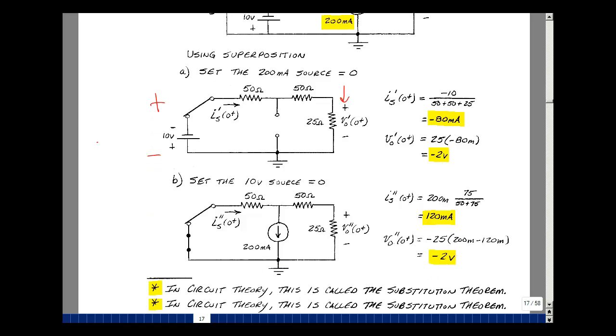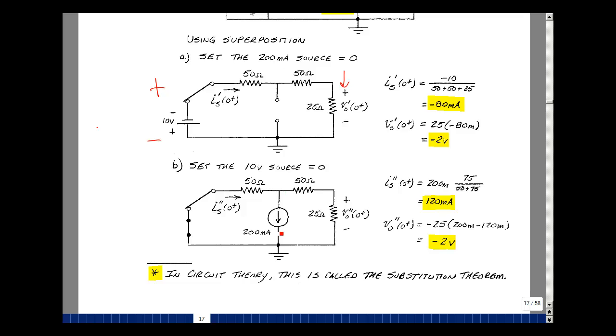Now let's set the 10 volt source equal to zero, short-circuiting that. We've got a current source here, 50 ohms in parallel with 75. We could use our current divider rule. Let's use a resistive current divider. I want the current in the 50 ohm resistance. It's going to be the other resistance, 75 ohms, over the 50 plus the 75, multiplied by the 200 milliamps, gives me 120 milliamps. If I have 200 milliamps here and 120 milliamps here, then I must have 80 left over. Multiply that by 25 ohms, I'll get two volts, but the current's flowing in this direction. That's going to create a drop like this, and I want the voltage in the other direction. So let's flip the sign. That's my value of I sub S due to the second source and Vout due to the second source.